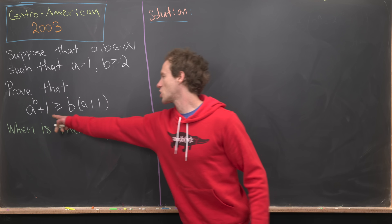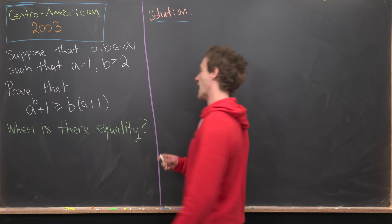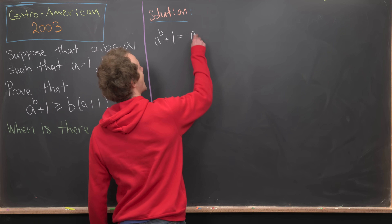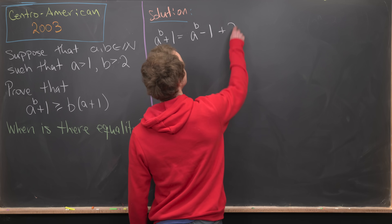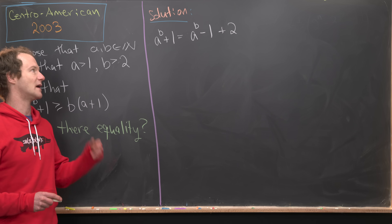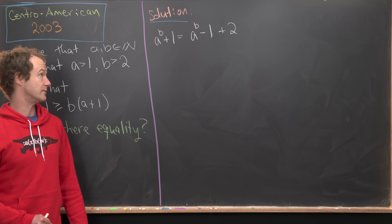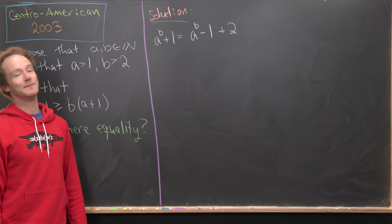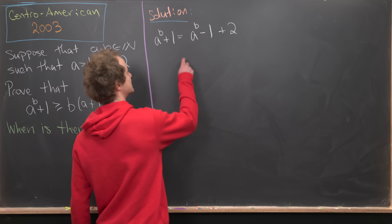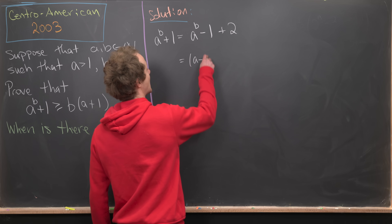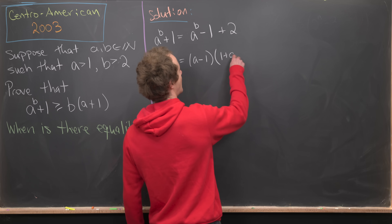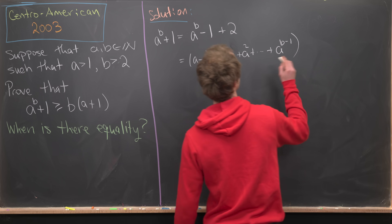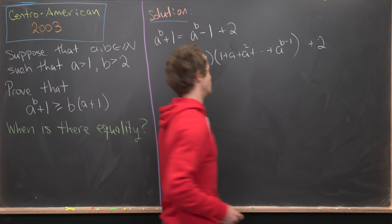Let's start with the left-hand side and see what we can do with that. We start with A to the B plus one and notice that we can write that as A to the B minus one plus two. We can then take A to the B minus one and factor it as A minus one times one plus A plus A squared plus all the way up to A to the B minus one, and then we add two to it.